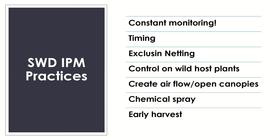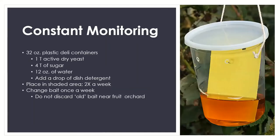You'll never fully eliminate SWD if it's present, but if you get the timing right and monitor correctly, you might be able to save your crop. Constant monitoring is critical — the minute you know it's present, timing is really important. There has been some research on exclusion netting, control on wild host plants, creating open canopies, chemical sprays, and switching to early-harvest cultivars. Start monitoring when fruit first starts to form and continue through end of harvest.